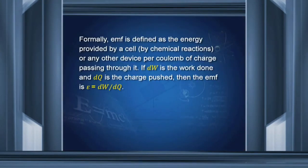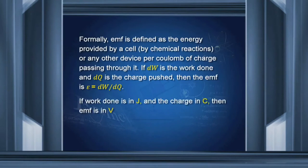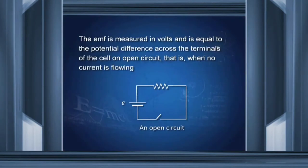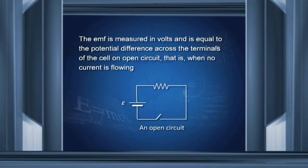Formally, EMF is defined as the energy provided by a cell by chemical reactions or any other device, for example changing magnetic fields. If the energy is dW and the charge pushed is dQ, then the EMF is defined as energy per unit charge: dW/dQ. If the work done is in joules and the charge is in coulombs, then the EMF is in volts. The EMF is measured in volts and is equal to the potential difference across the terminals of the cell on open circuit — that is, there is no current flowing.